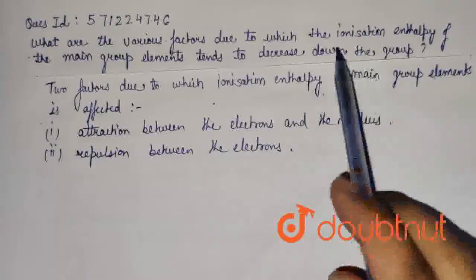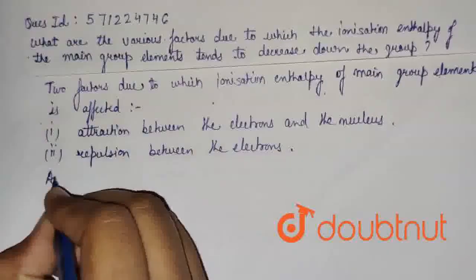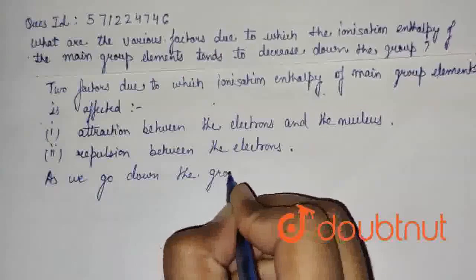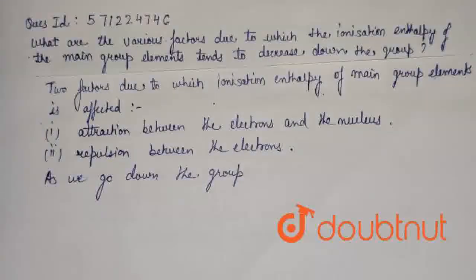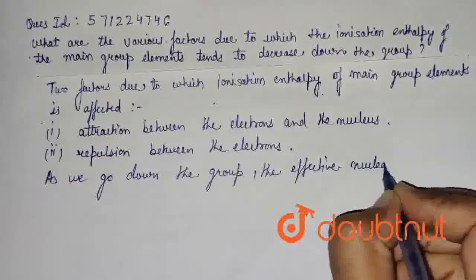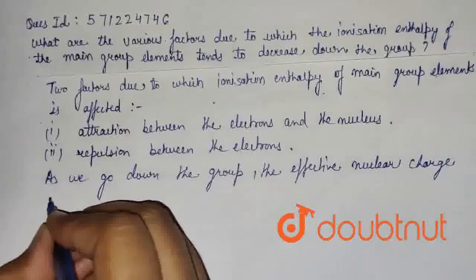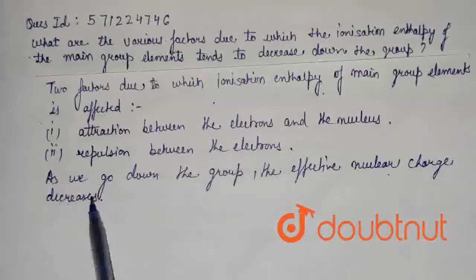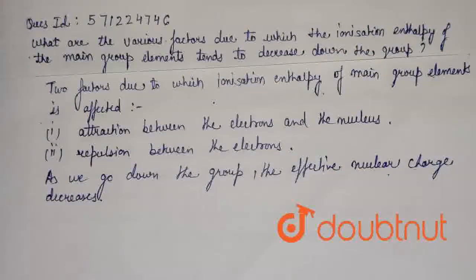Now, if you talk about the group, as we go down the group, the effective nuclear charge decreases. So what does effective nuclear charge decreasing mean? Whenever we go down the group, there is addition of more electrons — the number of electrons are increasing. And as the number of electrons increases, repulsion between the electrons also increases.